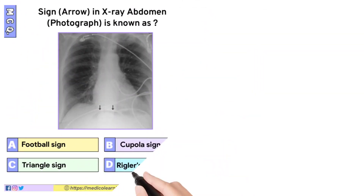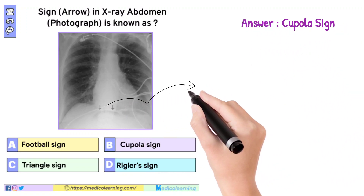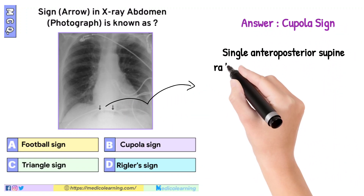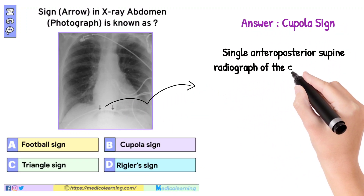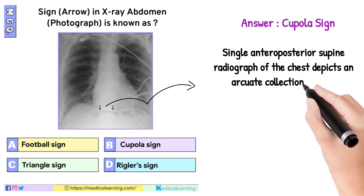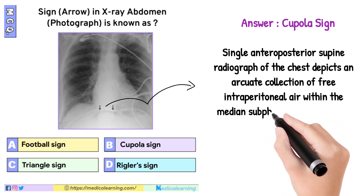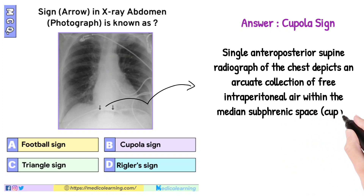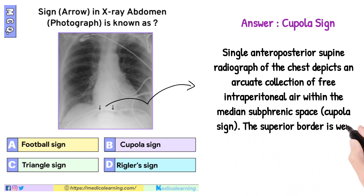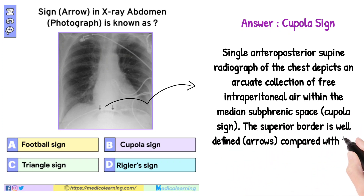In this question, the answer is the cupular sign. A single anteroposterior supine radiograph of the chest depicts an arcuate collection of free intraperitoneal air within the median subphrenic space — the cupular sign. The superior border is well-defined compared with the inferior extent of the collection.